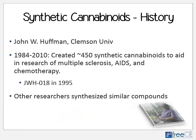We'll start with synthetic cannabinoids or synthetic marijuana. These have an interesting history. The synthetic cannabinoids were essentially developed by a researcher named John W. Huffman at Clemson University. Dr. Huffman realized that there were cannabinoid receptors in the body and that those receptors probably aren't there just for drugs of abuse — they probably have some action that can help medical conditions. So between 1984 and 2010, he created approximately 450 synthetic cannabinoid structures in order to help in the research of multiple sclerosis, AIDS, chemotherapy, and other medical conditions.